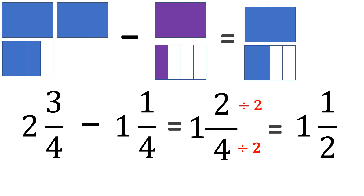The figure above is still showing 2 fourths. This means 2 fourths and 1 half are the same. If we remove the slices, then 2 fourths becomes 1 half. That means 2 fourths is the same as 1 half.